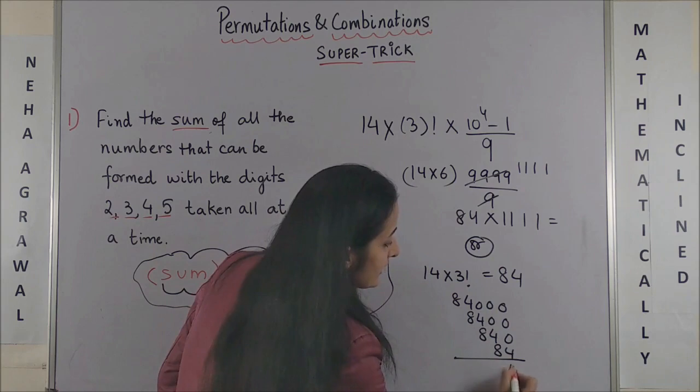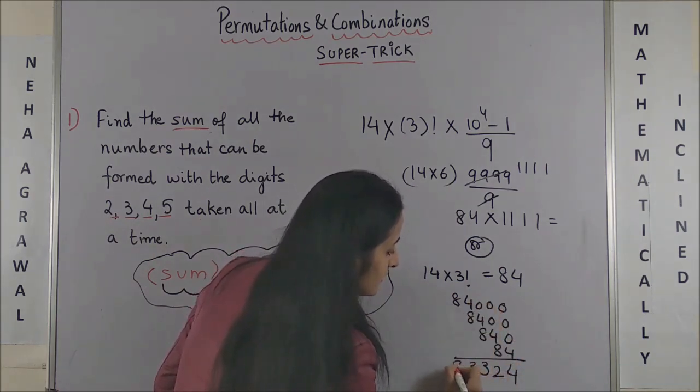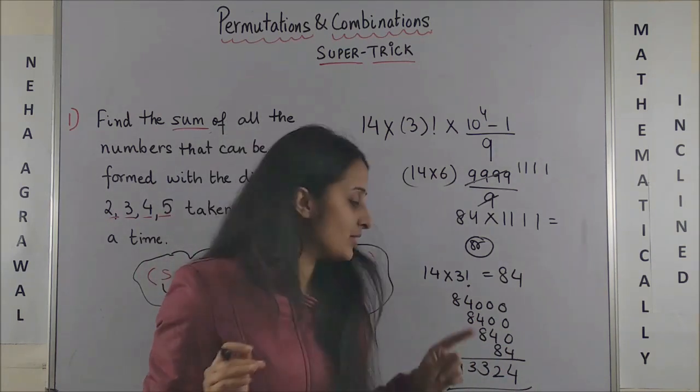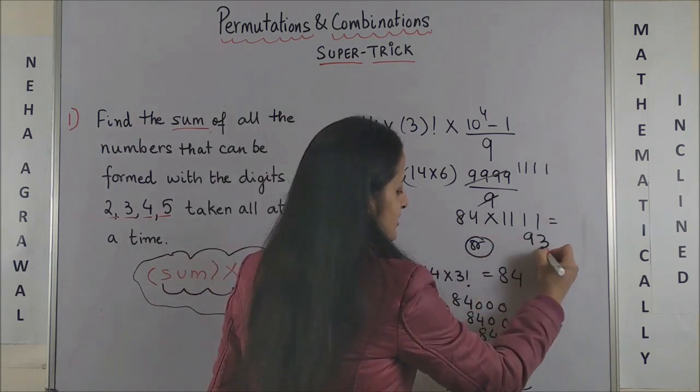Total it up, it is going to be 93,324. So the sum is going to be 93,324. If you try multiplying this, trust me, it is the same answer.